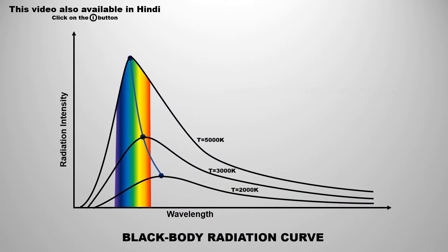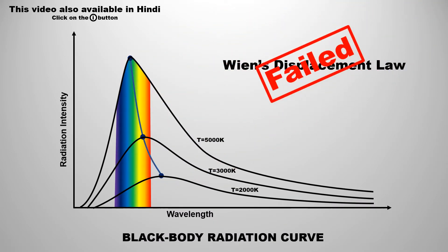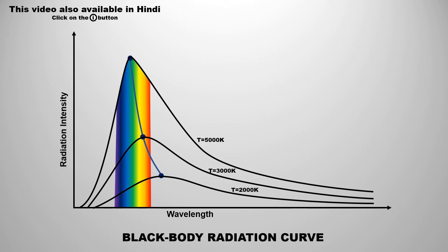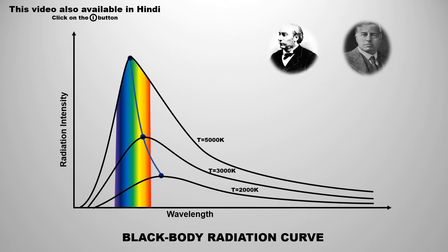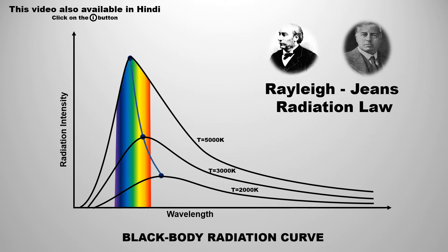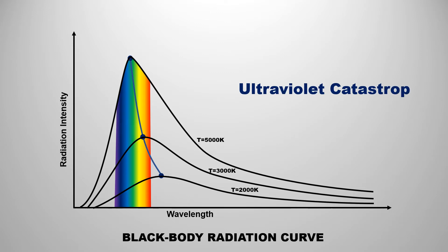After the failure of Wien's displacement law to explain the blackbody radiation curve, in 1905 Lord Rayleigh and James Jeans again tried to explain this curve with a new approach. But unfortunately, Rayleigh's law also could not fully explain this blackbody radiation curve. In this video on quantum mechanics, we will learn about Rayleigh's radiation law and also understand the reason for its failure, i.e., the Ultraviolet Catastrophe.